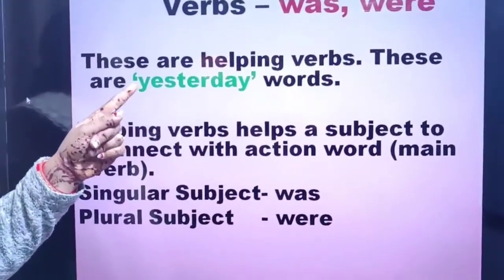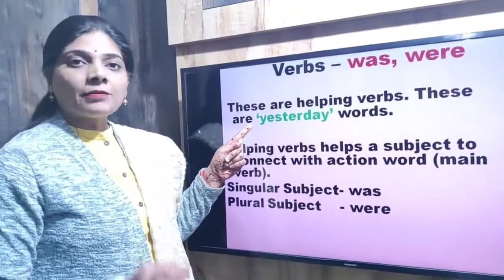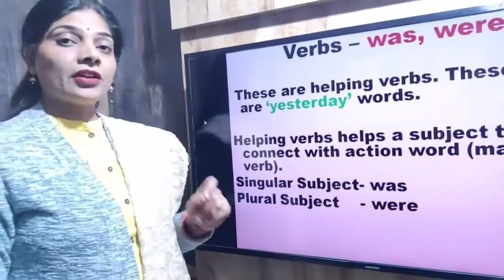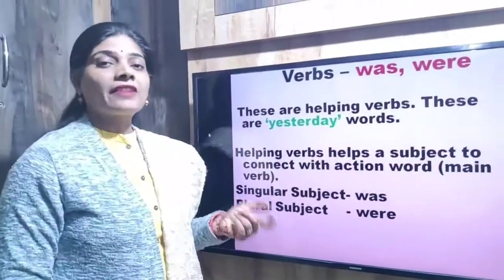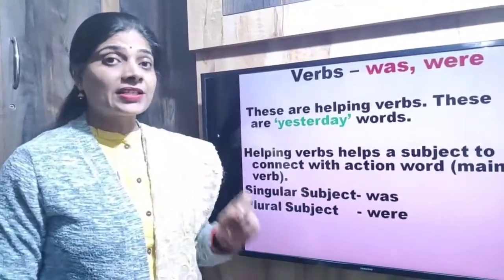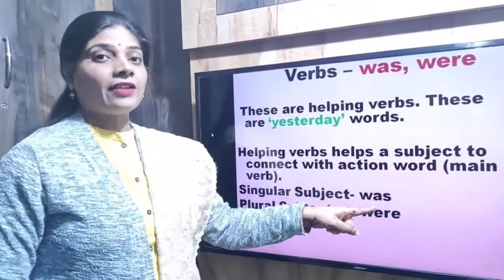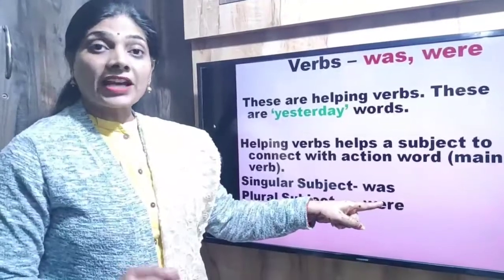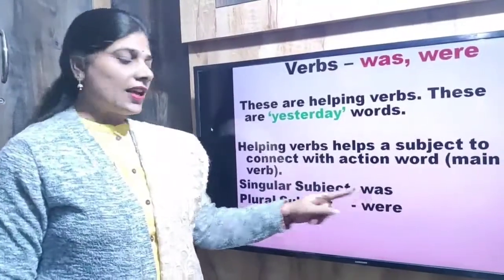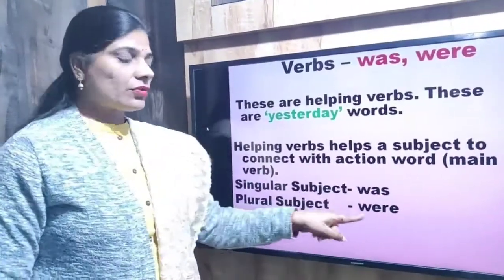Was and were denote that the action happened in the past. So whenever in a sentence the action happened in the past, you have to use the helping verb was or were. Remember: when your subject is singular, use was; when your subject is plural, use were.